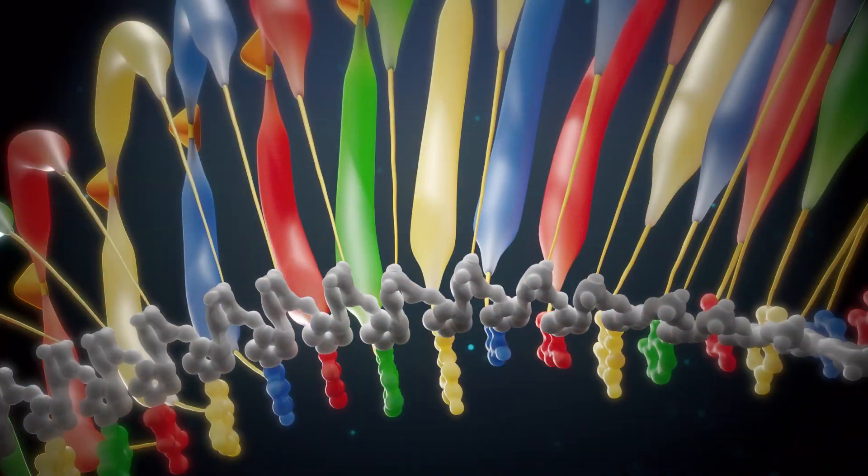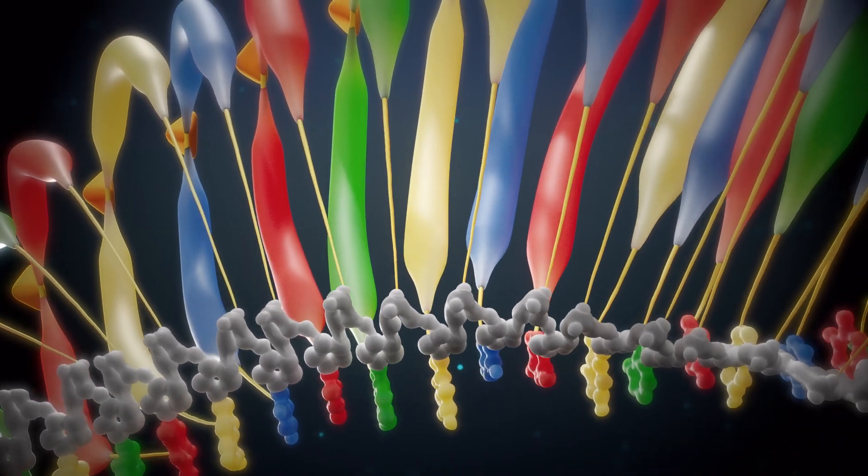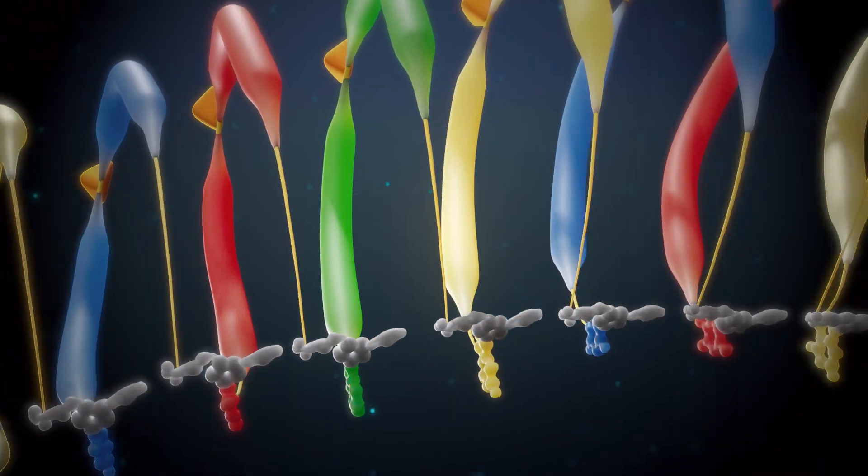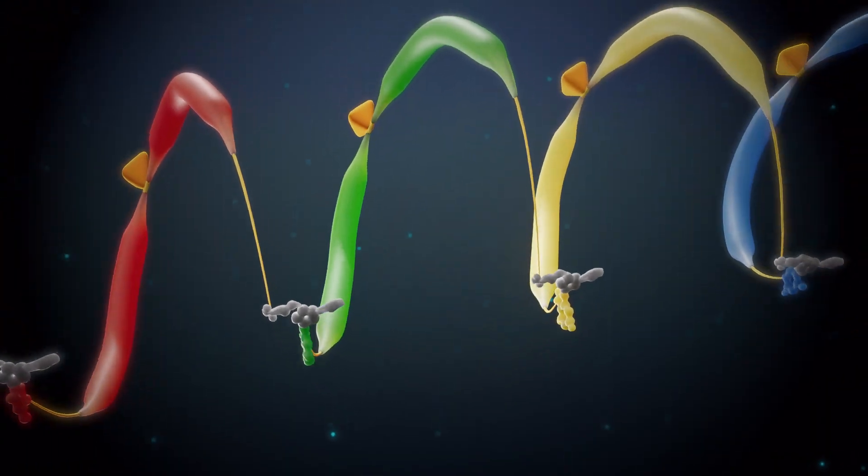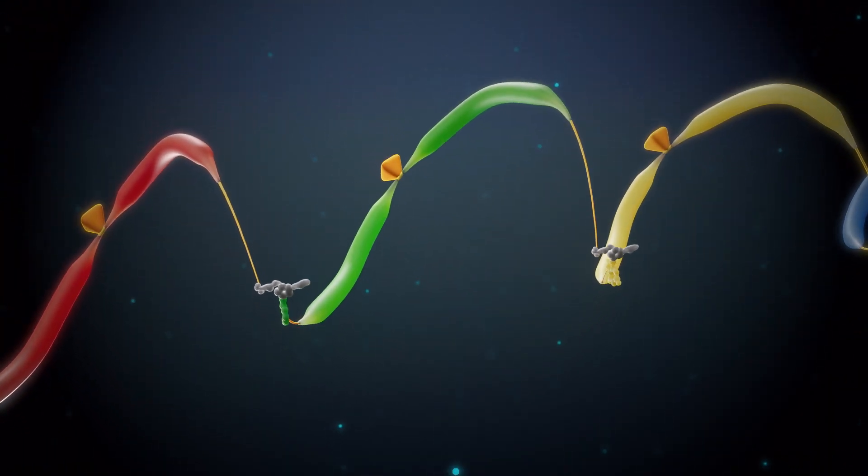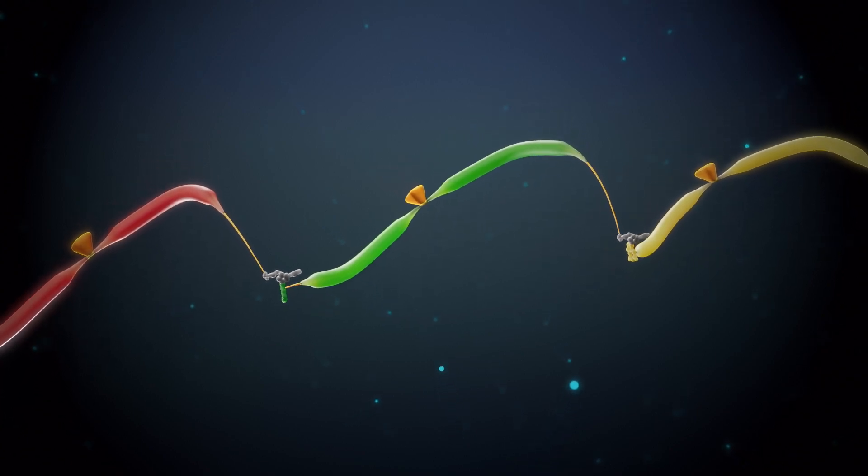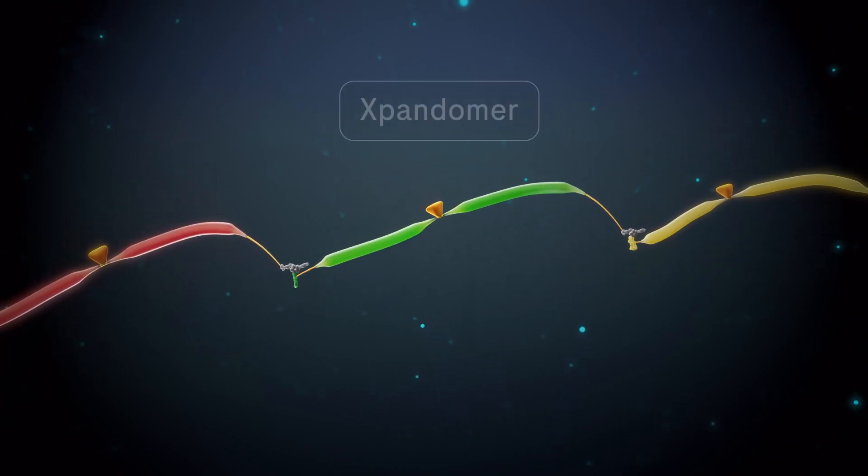After synthesis, a reagent is added, which degrades the DNA template and the cleavable bond between each of the XNTP bases is broken, allowing the backbone to expand. This product is called the expandomer.